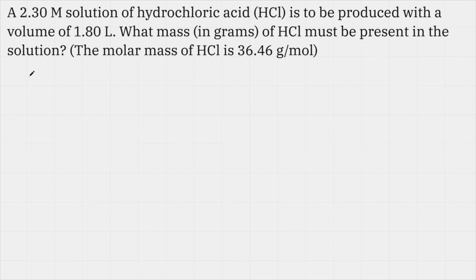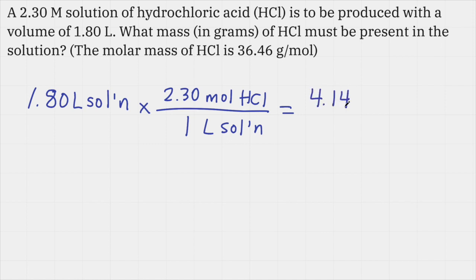I start with the given value of 1.80 liters. That's the amount of solution that we're given. The capital M means moles per liter—it's the concentration of the solution. I'm going to use that as a conversion factor to figure out how many moles of HCl I would need in this particular solution. The concentration needs to be 2.30 moles of solute, in this case HCl (the substance that's being dissolved), in 1 liter of solution. All I need to do is multiply 1.80 times 2.30. That comes out to 4.14. I've canceled liters of solution, and now I've figured out how many moles of HCl would need to be dissolved in this particular solution.